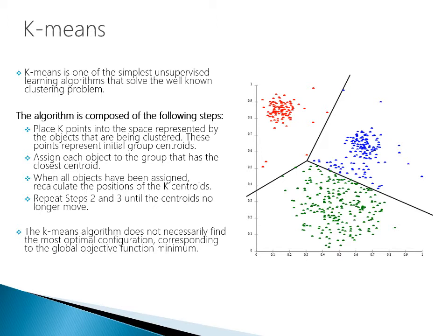The k-means algorithm does not necessarily find the most optimal configuration corresponding to the global objective function minimum. In our example, we pick three clusters — red, blue, and green. We pick one point arbitrarily as the red centroid, then another as the blue, then the green. We start assigning points close to each cluster until there's a clean break. Then we iterate, shifting where each centroid exists, until no more points are shifting between clusters. That's the idea behind the k-means cluster.